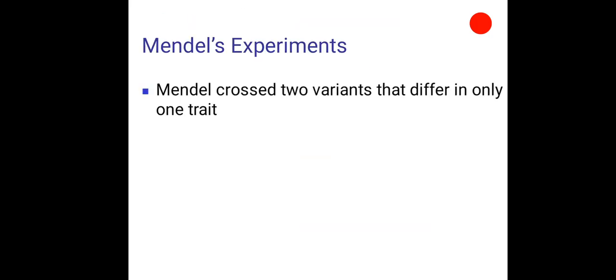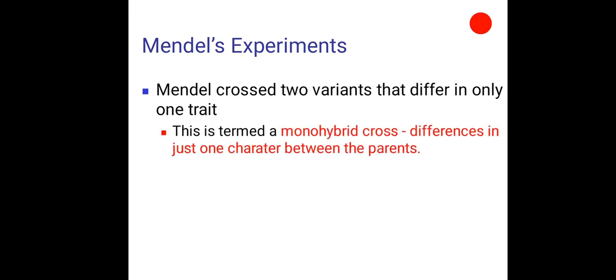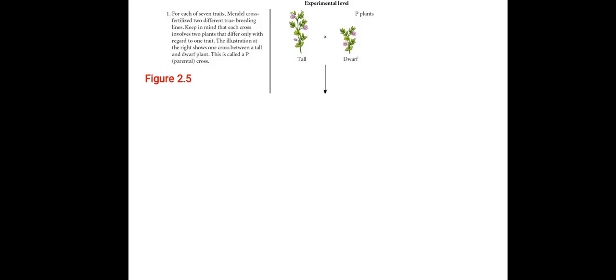Mendel crossed two variants that differ in only one trait. This is termed as monohybrid cross. For each seven traits, Mendel cross-fertilized two different true breeding lines. Keeping in mind that each cross involves two parents or two plants that differ only with regard to one trait. The illustration at the right shows one cross between a tall and a dwarf plant. This is called a P or the parental cross.